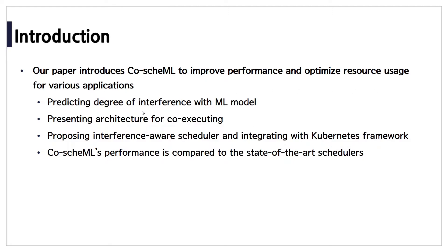The first contribution of the paper is constructing an interference model with ML, which predicts the degree of interference from accumulated profiling. The second contribution is that an architecture for co-executing applications is proposed. Third, we propose an interference-aware scheduler and integrate it with the Kubernetes framework. The last contribution is that CoScheduleML's performance is compared to state-of-the-art schedulers.